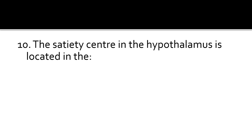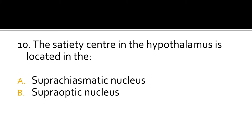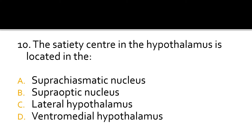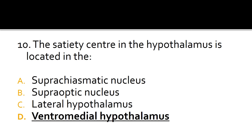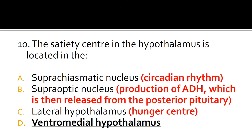Question 10. The satiety centre in the hypothalamus is located in: the suprachiasmatic nucleus, supraoptic nucleus, lateral hypothalamus, or ventromedial hypothalamus. The correct answer is D, ventromedial hypothalamus. The suprachiasmatic nucleus is important for circadian rhythm. ADH or vasopressin is produced in the supraoptic nucleus. The hunger centre is located in the lateral hypothalamus.